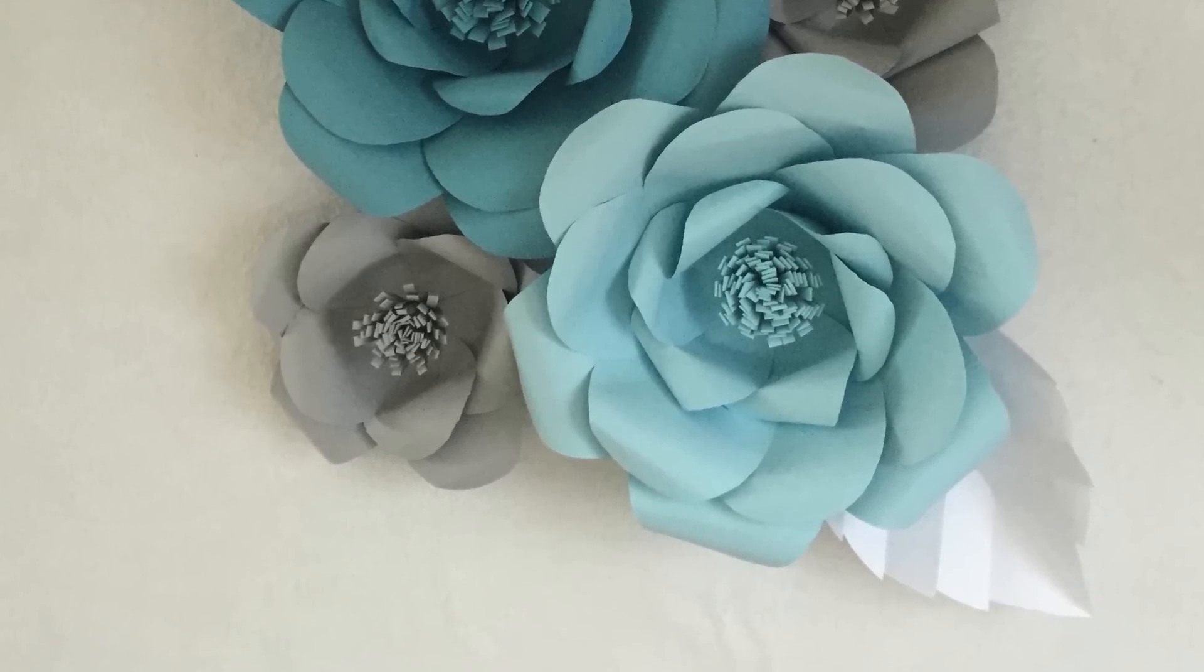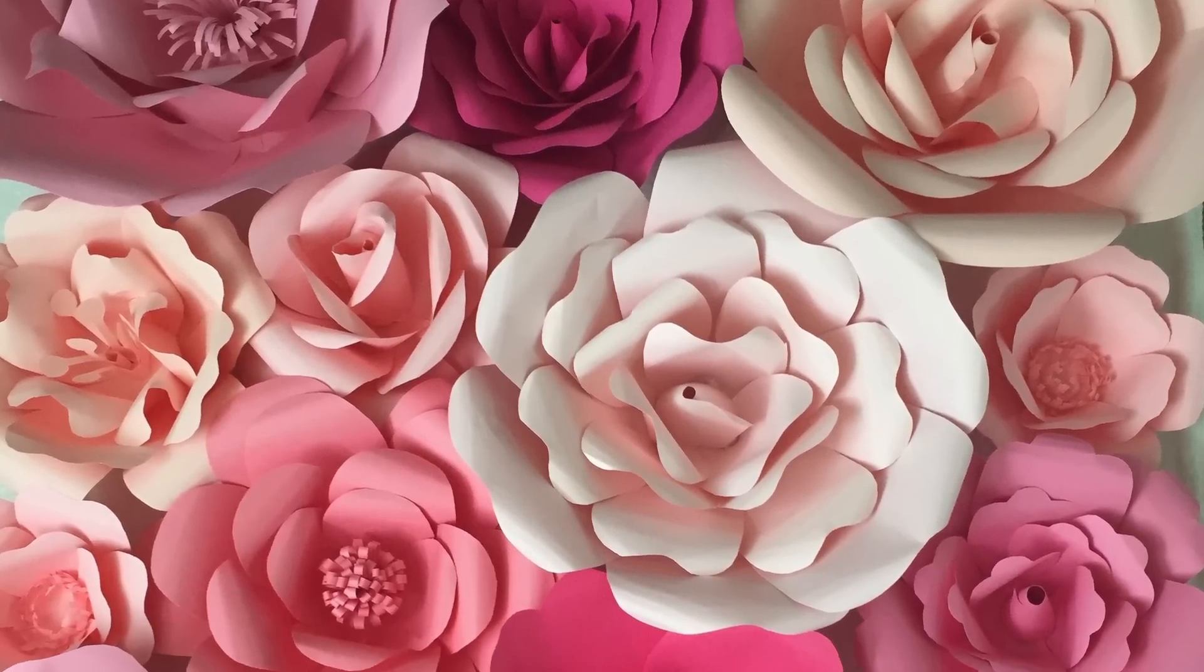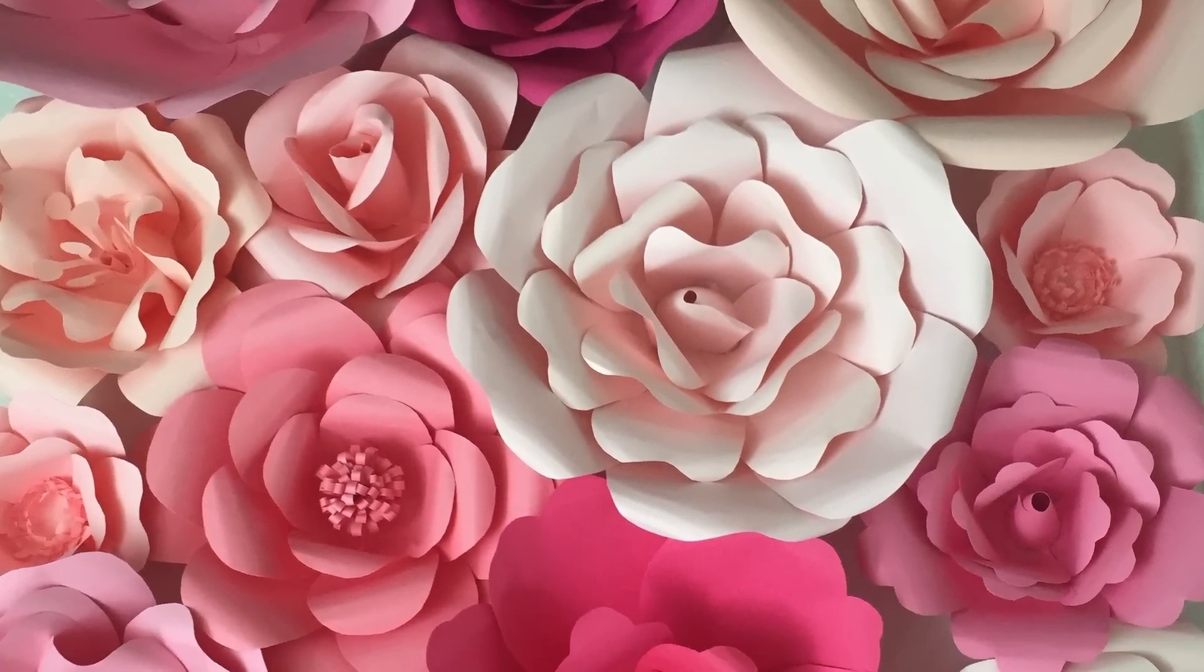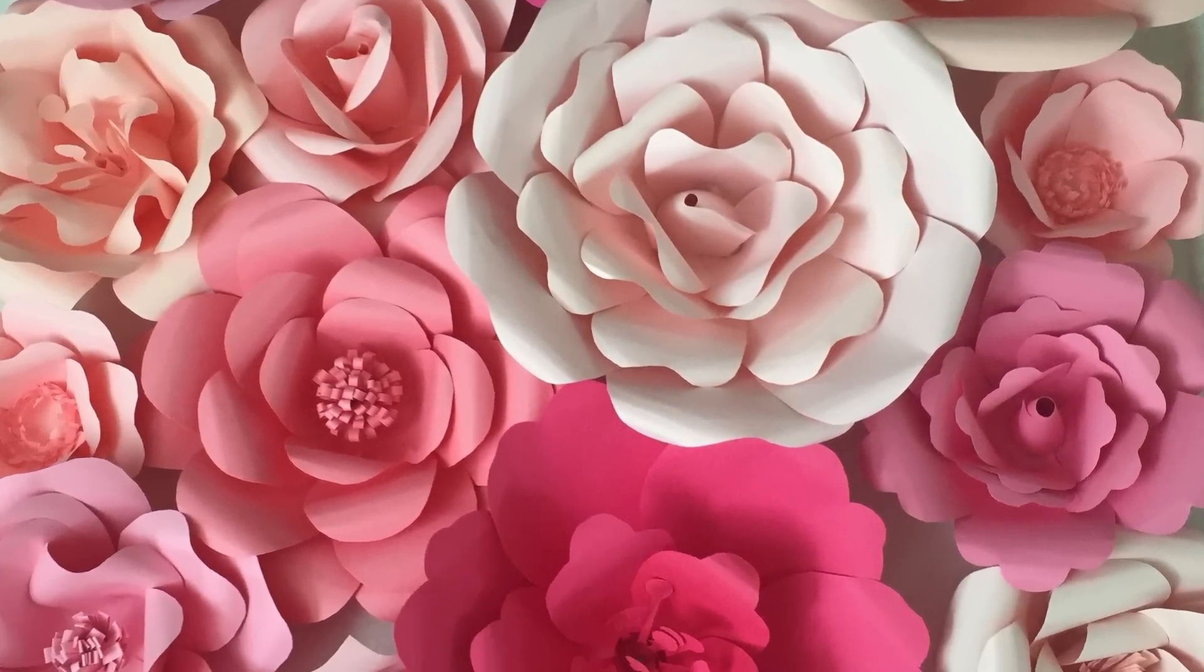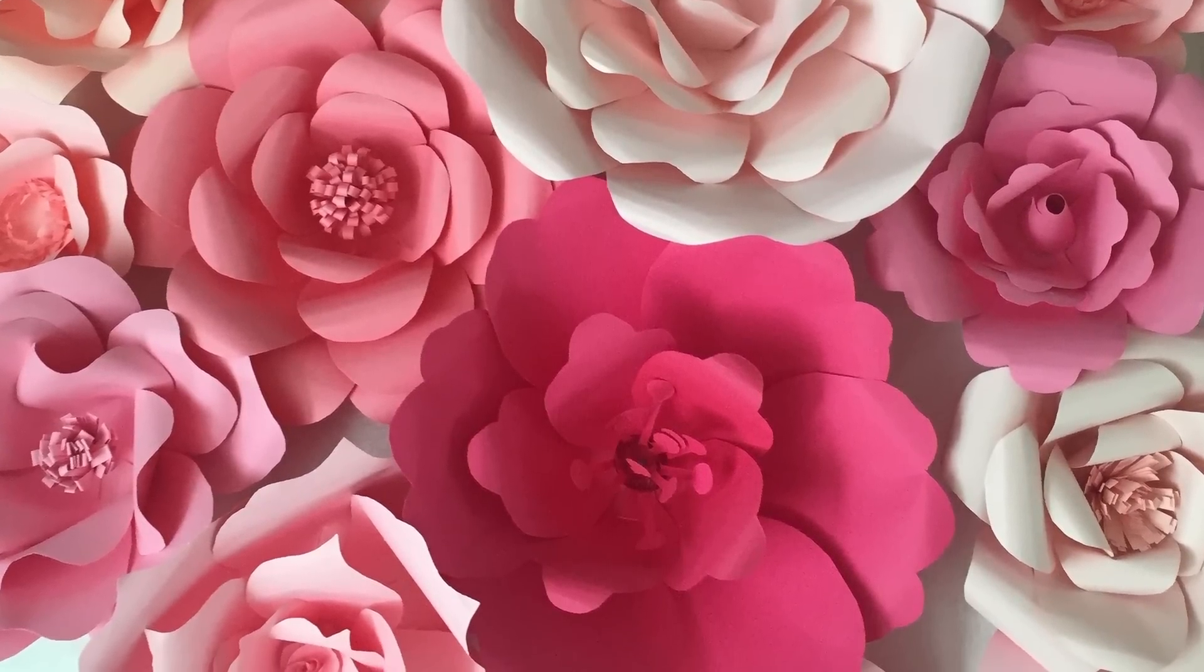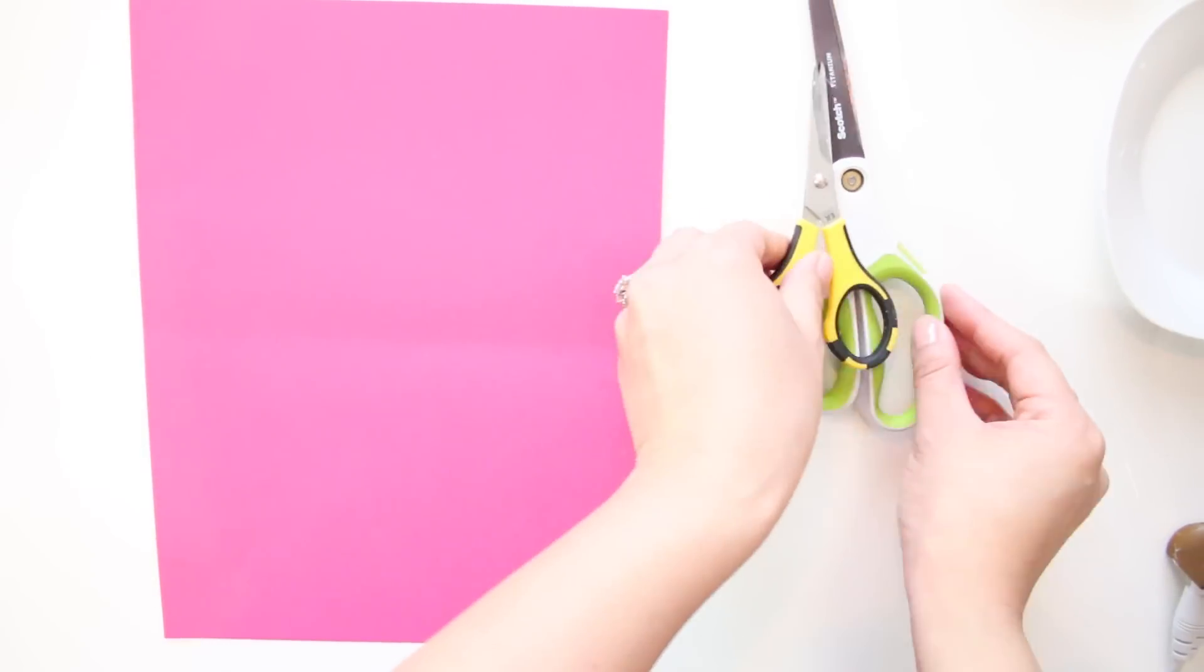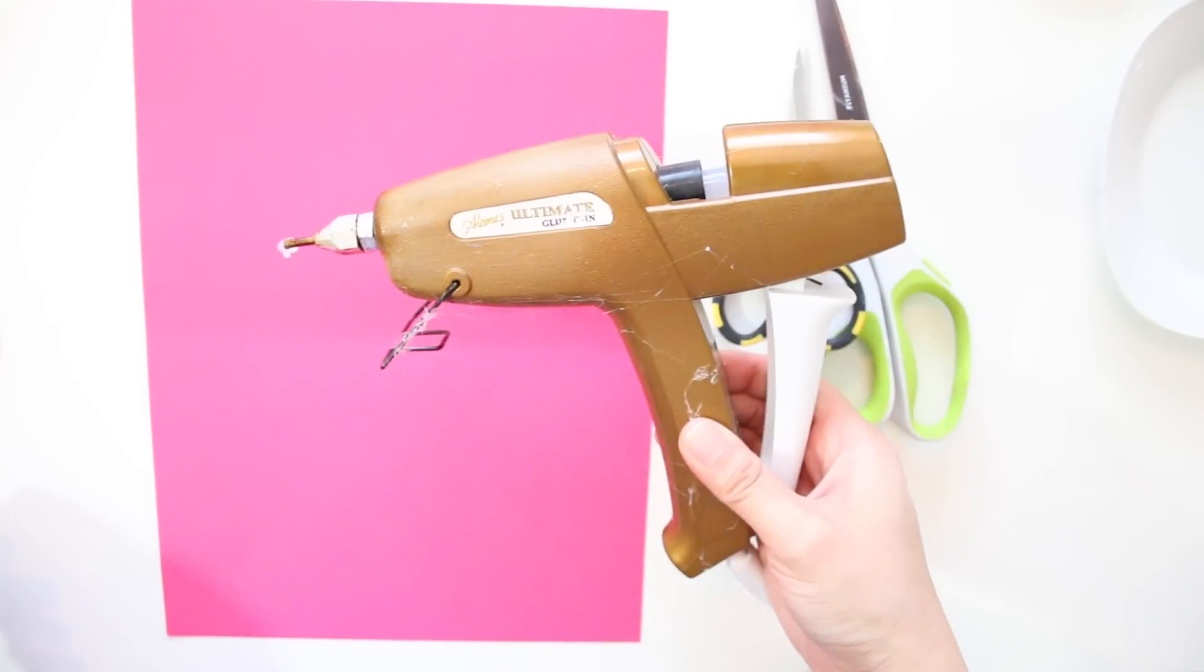For supplies, you'll need 9 sheets of US letter paper, which is 8 1/2 by 11, which is a regular copy-sized paper. For this, I used a 60-pound weight cardstock, but you can use any type of paper that you want. I find that it's better to use a heavier paper. You'll also need some scissors and a glue gun.